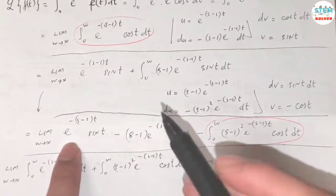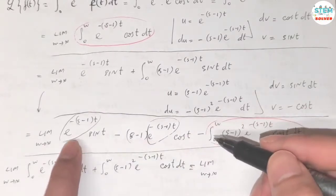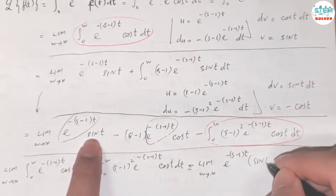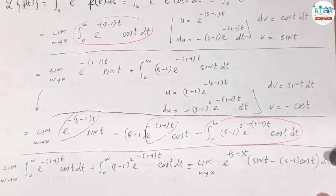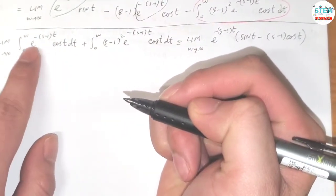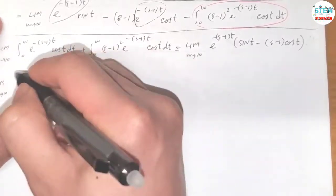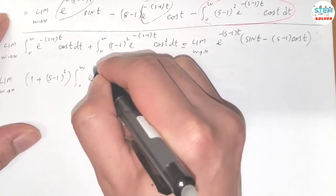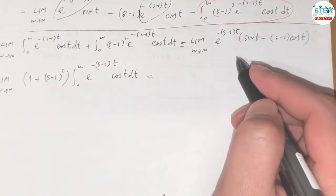On the right-hand side we can factor out the common terms. What remains in front is sin(t) minus (s-1)·cos(t). Then on the left, factoring out the integral, we have 1 plus (s-1)² times the limit as w goes to infinity of the integral from 0 to w of e^(-(s-1)t) · cos(t) dt equals the right-hand side.